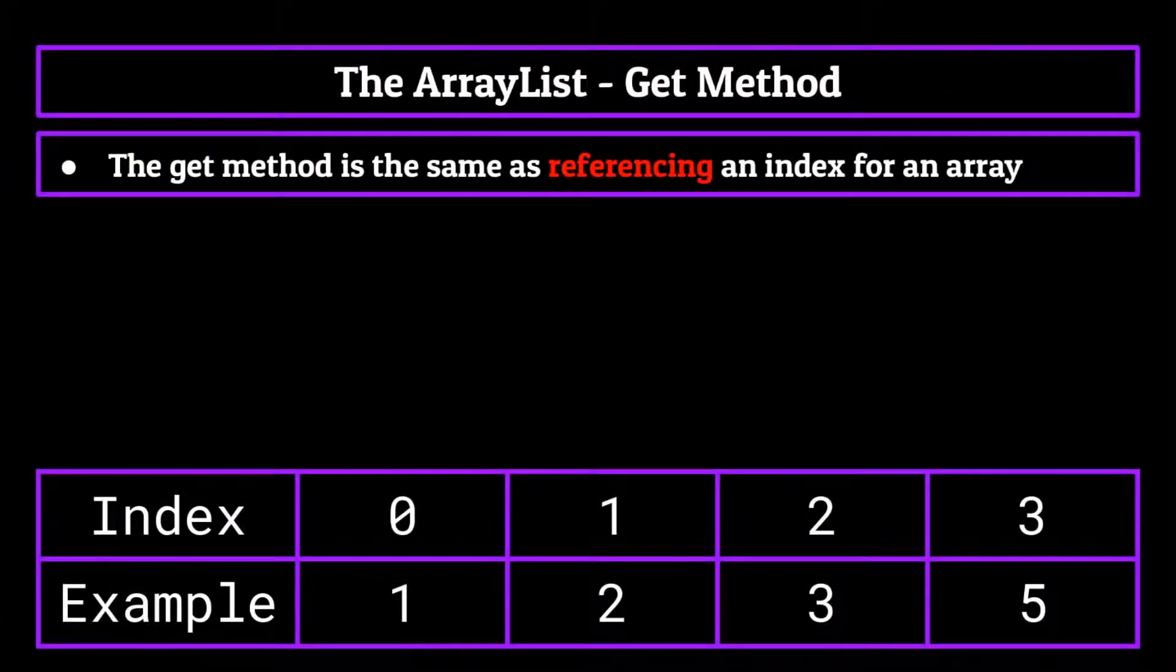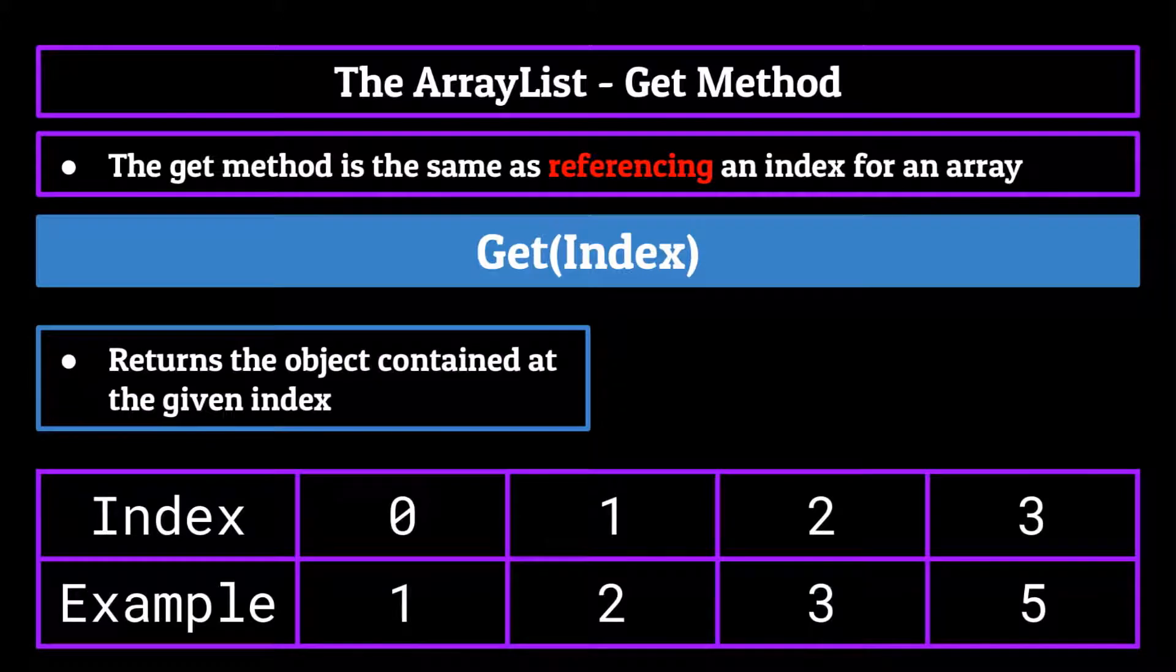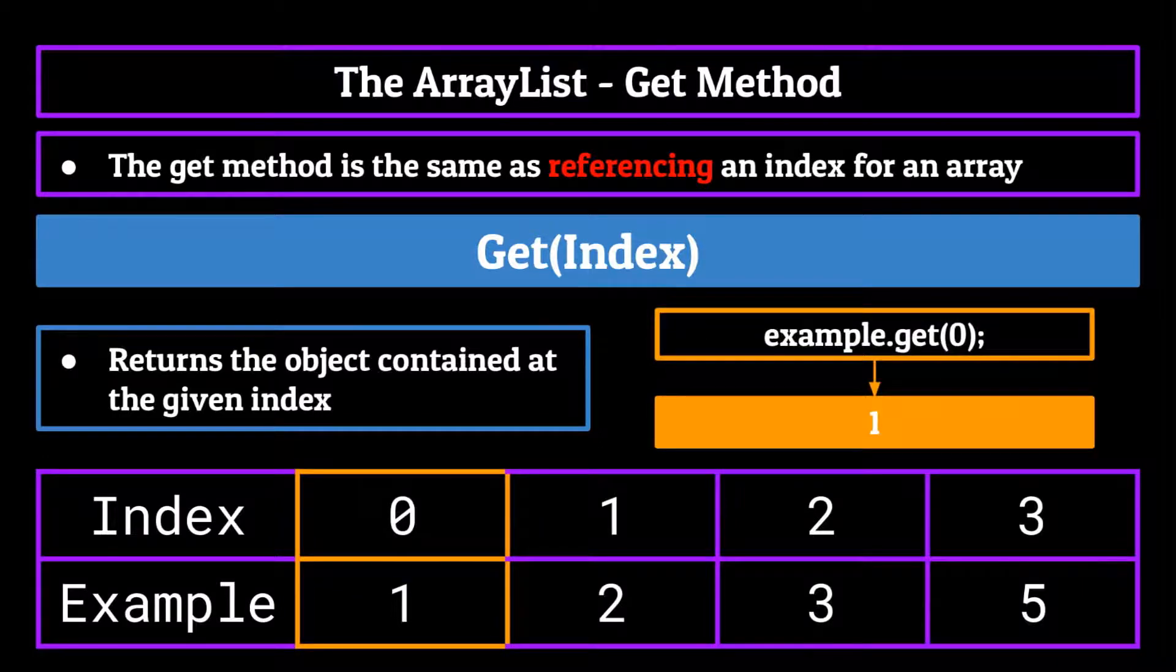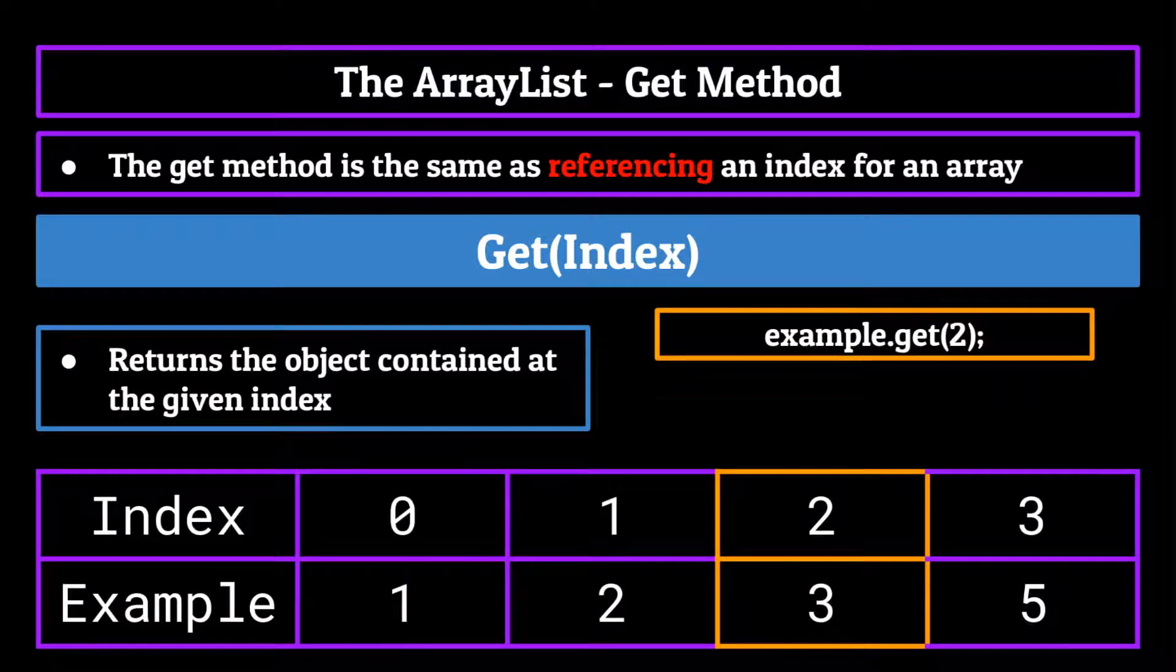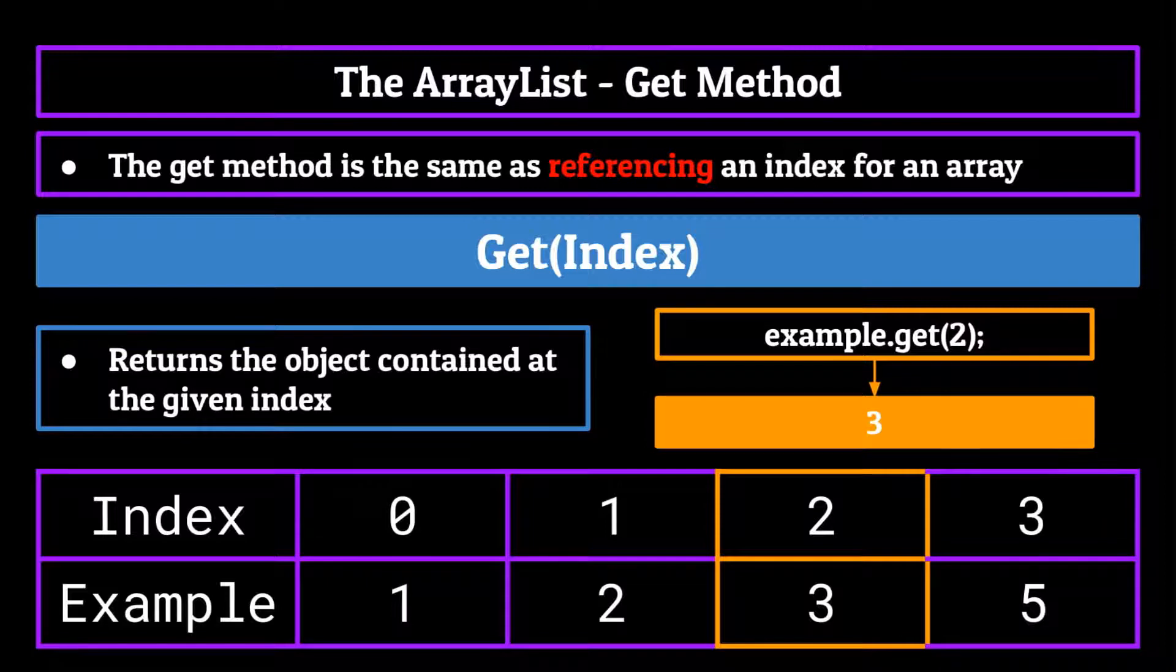Up next is the get method. Now the get method is pretty much the same as referencing an index for an array. It takes in an index location and will return back to you the value at that location. So example dot get with an argument of zero would return one, example dot get with an argument of two would return three, and so on.